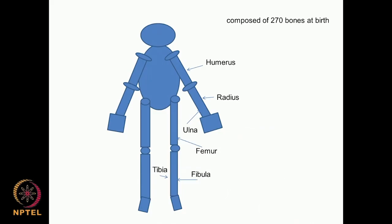If you look at the human body, it contains 270 bones at birth and it reduces to 206 bones as you grow older because certain bones get fused. For example, if you look at the humerus, the radius which is outside, the ulna which is inside the arms, then your hand and fingers, and if you go to the feet you have the femur, lower fibula, tibia, and then the actual feet.